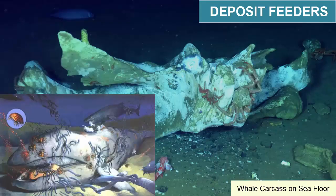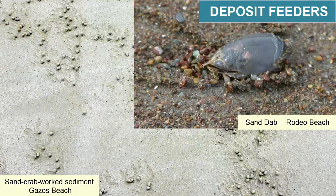This detritus includes dead carcasses, used exoskeleton molts, feces, and other organic debris. Deposit feeders also include organisms like lugworms and sand crabs that sift through the sediment and find their food living between the sand or mud grains.